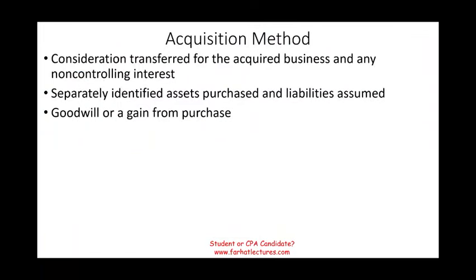When we buy a company, we're going to be using the acquisition method. Think about it — what do you do when you buy something? You have to find out how much you are paying, how much you are giving up. That's consideration transferred. When you pay for something, you usually use cash. Companies might use cash, issue stocks, or issue a bond to raise money. There are more than one way to buy a company, but they're all called consideration transferred.